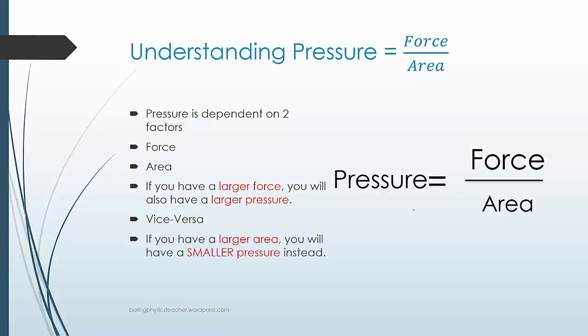The other way is that if you have a larger area, you find that instead of having a larger pressure, you have a smaller pressure instead, because area is in the denominator. So if this goes bigger, you find that pressure goes smaller. The opposite also applies. If the area goes smaller, pressure goes bigger.